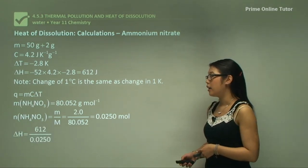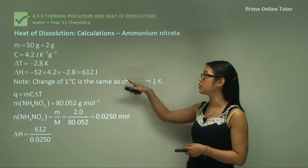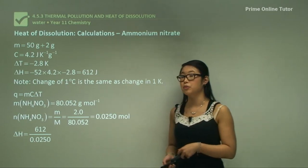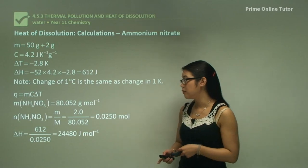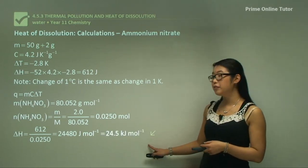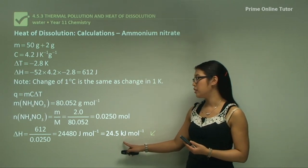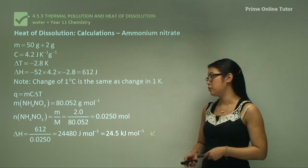So the delta H is equal to 612 divided by the number of moles. So 612 joules divided by 0.025 moles gives us 24,480 joules per mole. And that's equivalent when we convert the units to kilojoules—divide by 1000—24.5 kilojoules per mole.